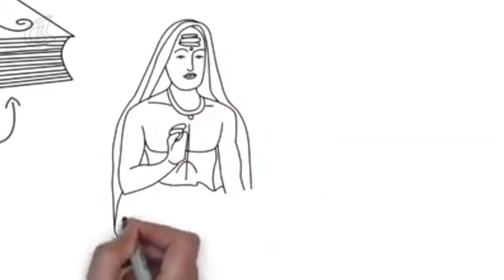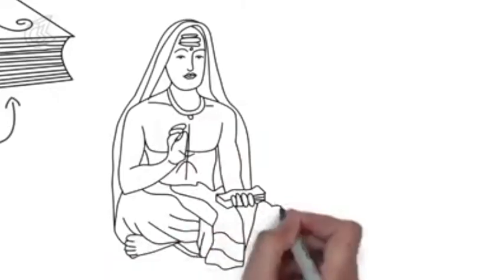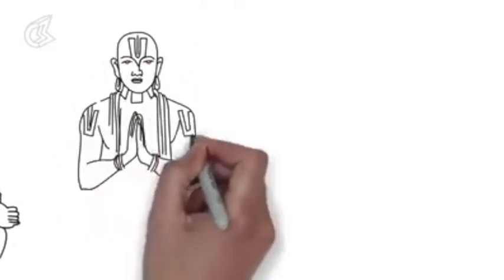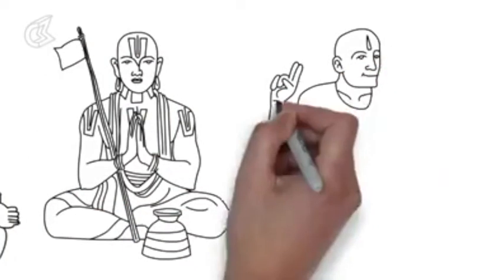Philosopher Adi Shankara saw in Gita the oneness of divinity and humanity. Ramanuj and Madhav found in the Gita the difference between the human and the divine.